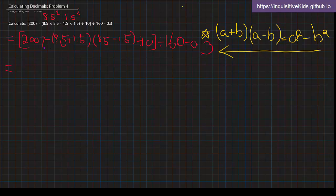8.5 plus 1.5 is 10, and we times 10. 10 times 7 equals 70. 70 divided by 10 equals 7, so it's 2007 minus 7, which is 2000. Then we're dividing by 160 minus 0.3, and in the end we get 12.2.